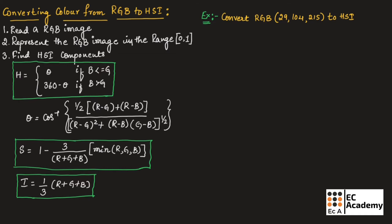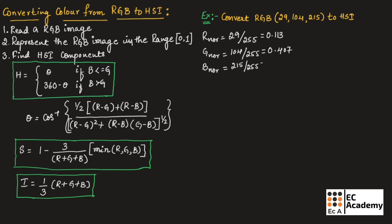The second step is to normalize the RGB values in the range of 0 and 1. The normalized R value equals 29 divided by 255, which gives 0.113. The normalized G value equals 104 divided by 255, which gives 0.407. The normalized B value equals 215 divided by 255, which gives 0.843.